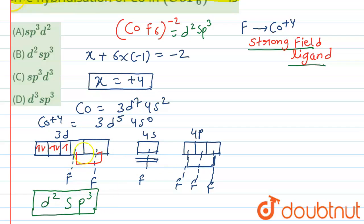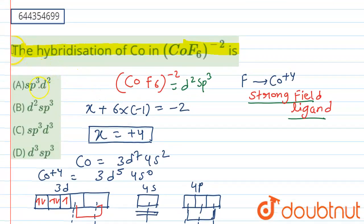So now if we check the options here, our option B, that is d2sp3, is the correct one. And this type of complex is called an inner orbital complex.